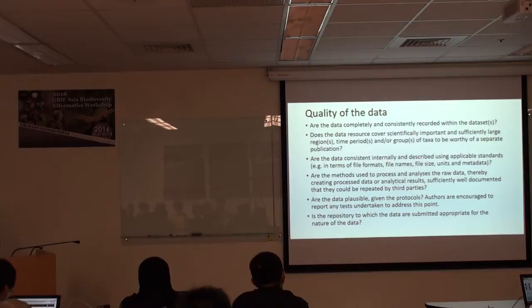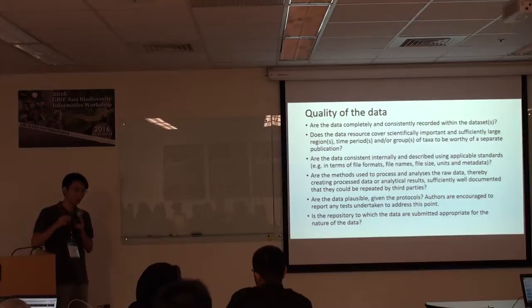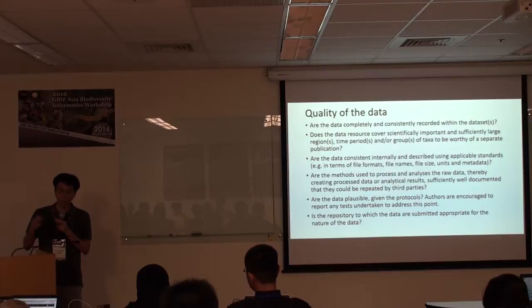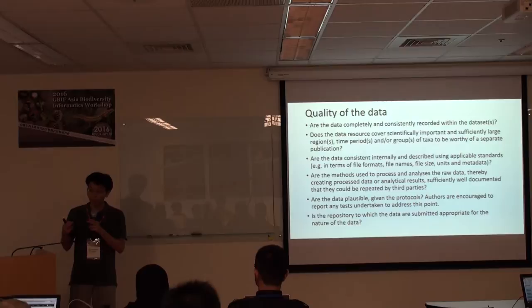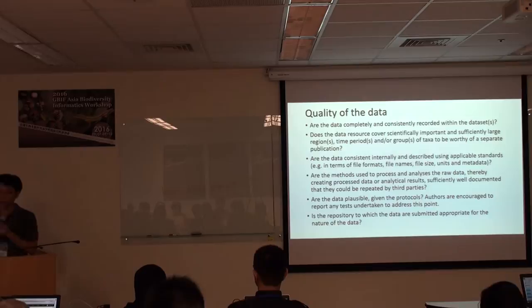Regarding data quality: are the data completely and consistently recorded within the dataset? If we adopt Darwin Core, we have to do the mapping. When you publish on IPT, it will validate your data structure — just like yesterday when we had some errors and it showed error messages. You have to check the error messages and test the publication process. So using IPT has advantages in helping you check your data file.